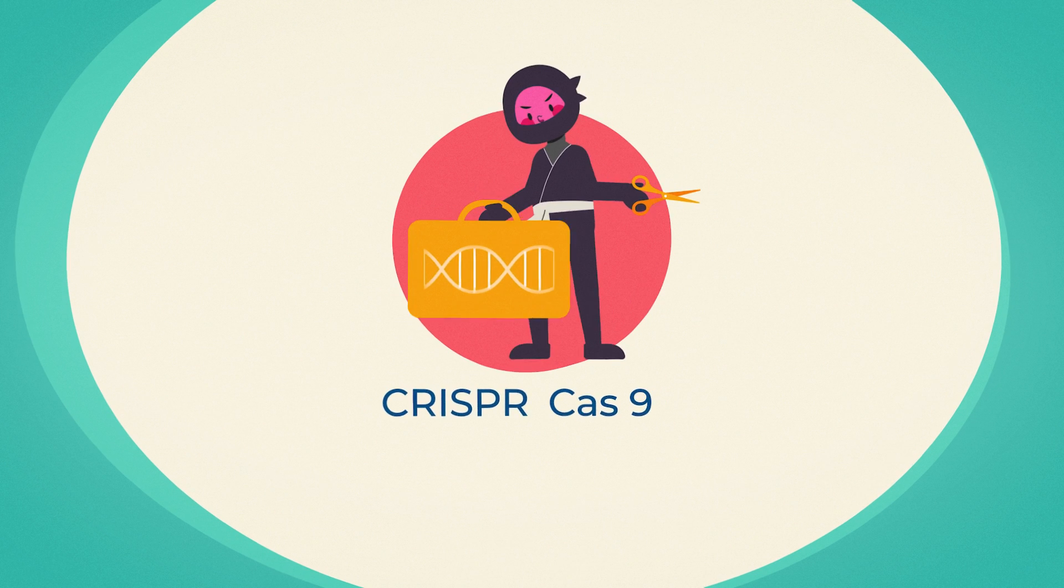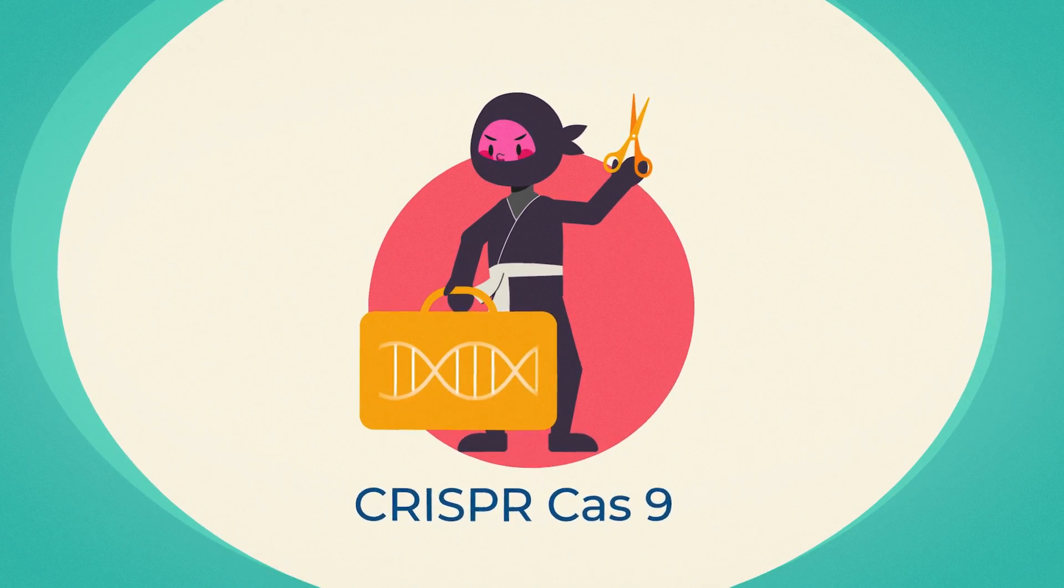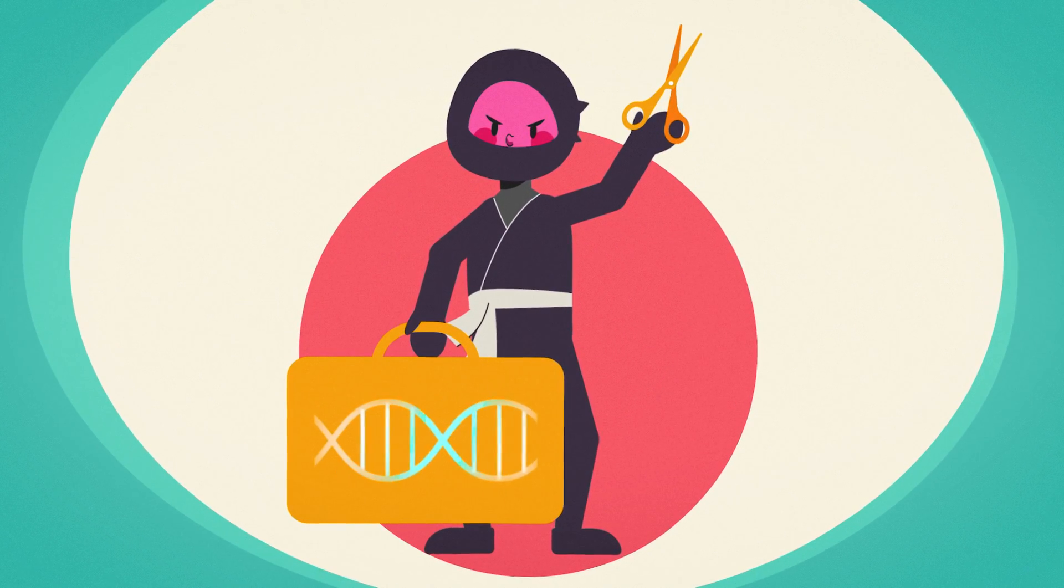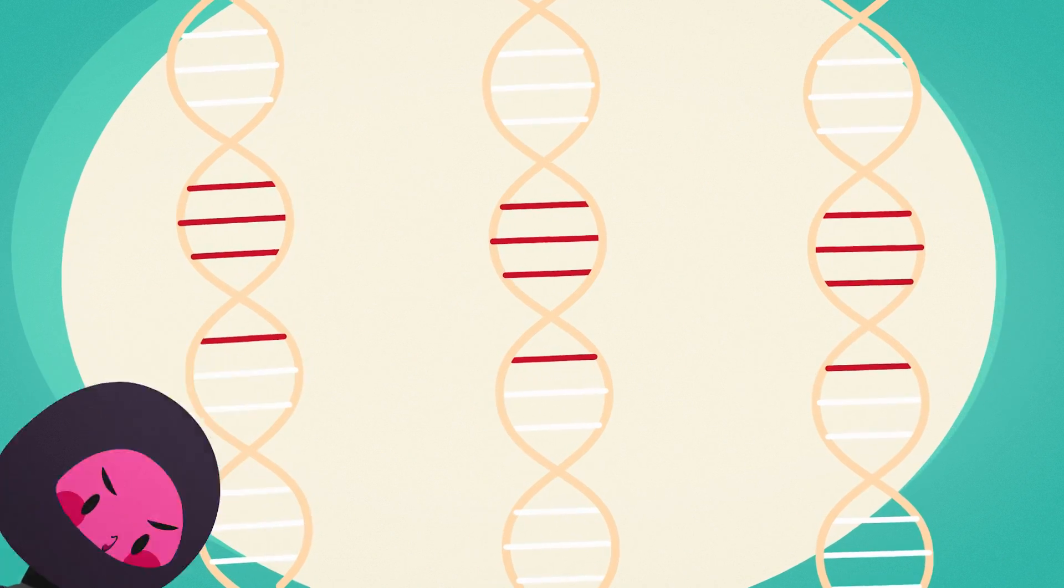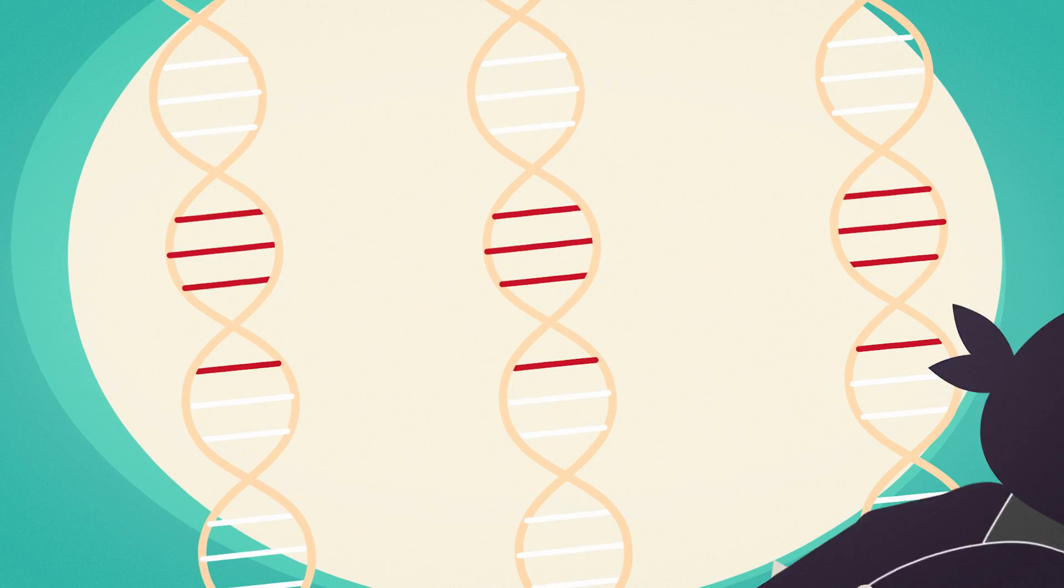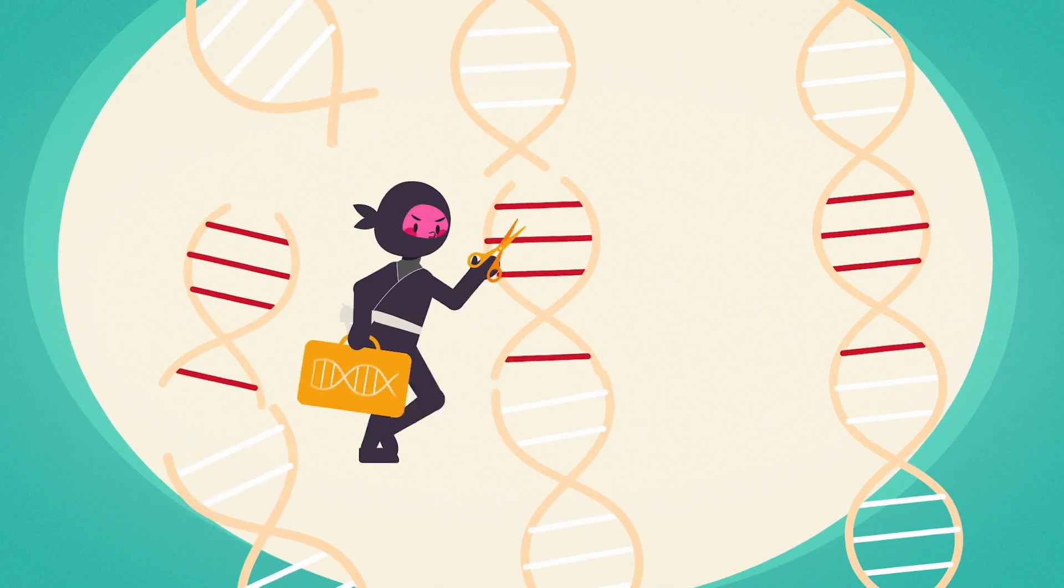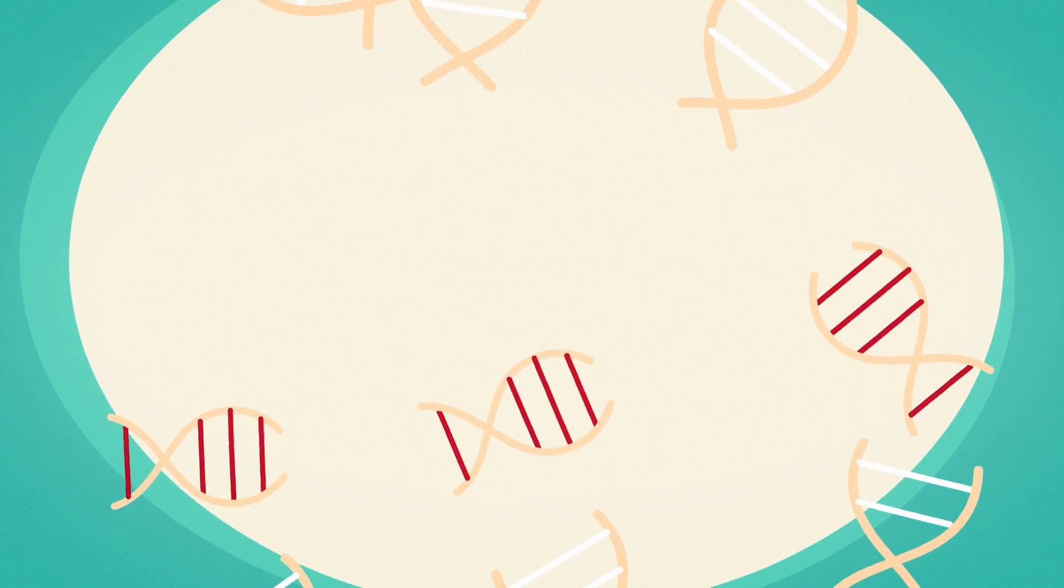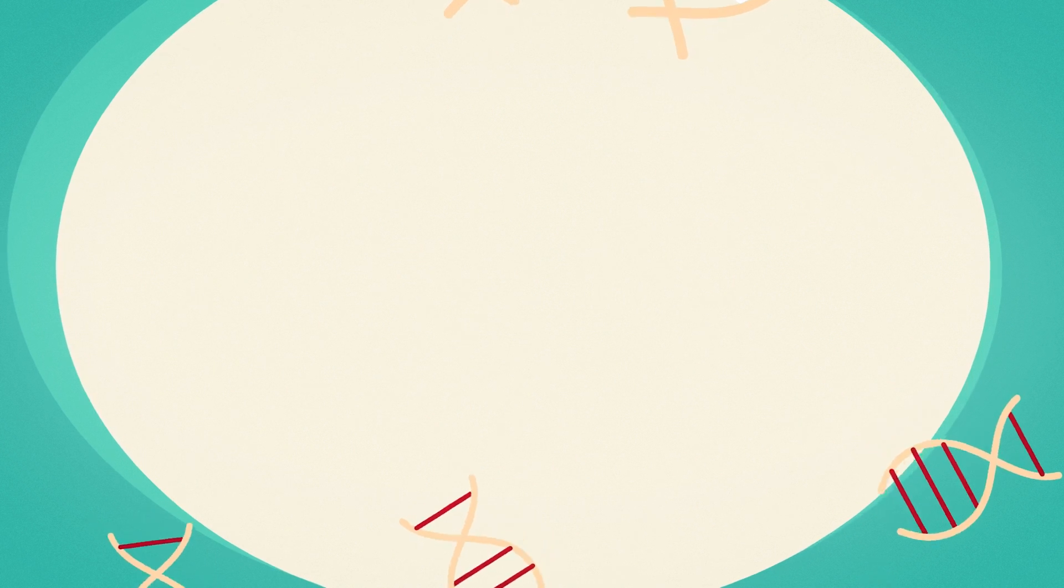Cas9 carries the guide RNA along with it on the job to track its prey. After infiltrating cells, Cas9 hunts down DNA segments matching the CRISPR-RNA. Wherever it finds them, it attacks, slicing through both DNA strands and severing them.